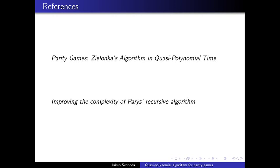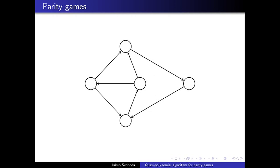First, we need to know what parity games are. A parity game is played between two players, even and odd. It is played on a directed graph where every vertex has an outgoing edge. Moreover, every vertex has some priority.